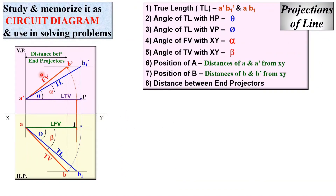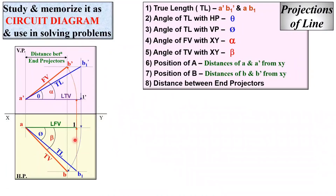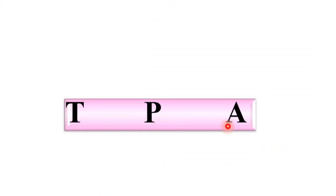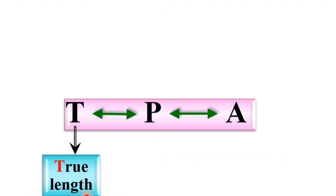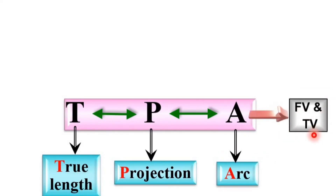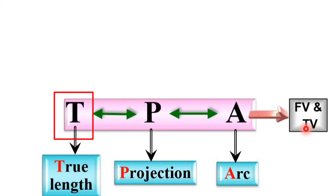Now I will show you a very shortcut method to remember the steps to draw projections of lines. Remember the sequence TPA: T represents true length, P represents projection, and A represents arc. To draw the front view and top view from the true length, follow this sequence: first draw the projection from the true length, then draw the arc, and you get the front view and top view. In reverse, to find the true length from the front view and top view, first draw the arc then the projection.